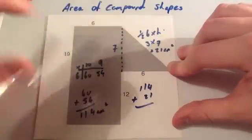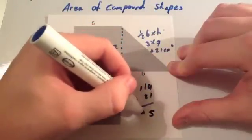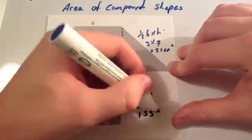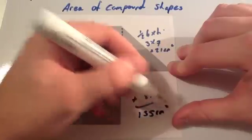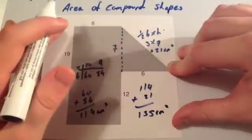I'll give you the area of the whole compound shape. 4 plus 1 is 5. 1 plus 2 is 3 and 1. So the area of this whole compound shape is 135 centimeters squared. Make sure you include your units because it's area centimeters squared.